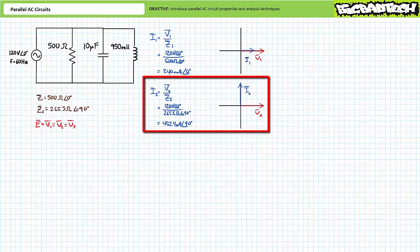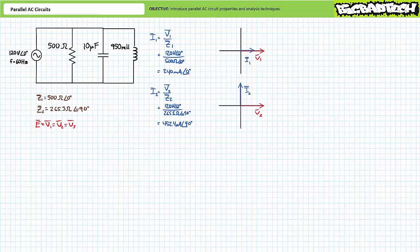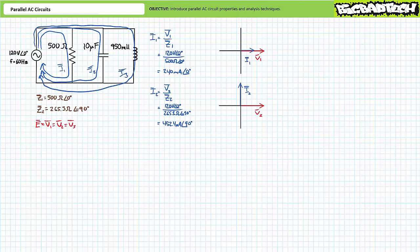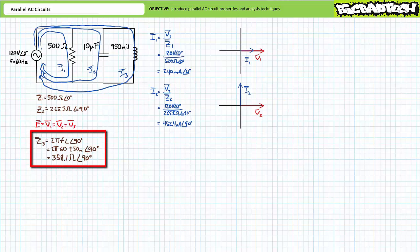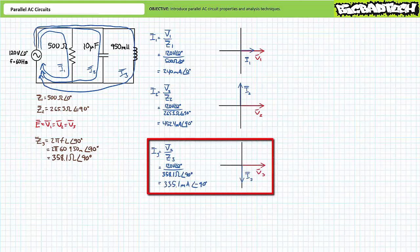Similarly, voltage across capacitive impedance Z2 remains 120 volts at zero degrees, and current through it remains 452.4 mA at 90 degrees — the phasor diagram for I2 remains unaffected. From the perspective of these original two parallel elements, absolutely nothing has changed. However, this additional parallel path will draw current from the source. At 60 hertz, the 950 millihenry inductor presents a complex impedance of 358.1 ohms at an angle of 90 degrees — let's call this Z3. Applying Ohm's law, I3 is approximately 335.1 mA at an angle of negative 90 degrees, lagging the voltage across it by 90 degrees.